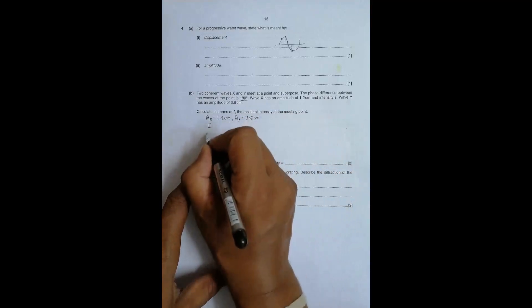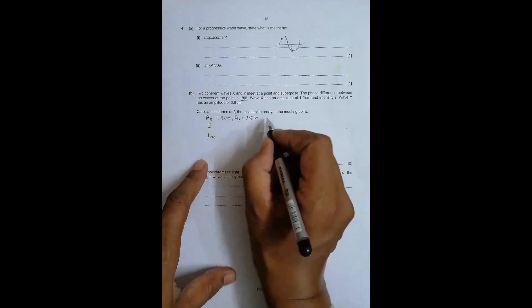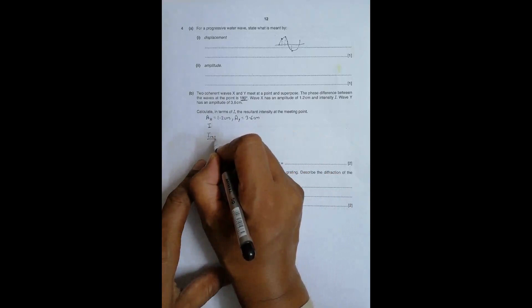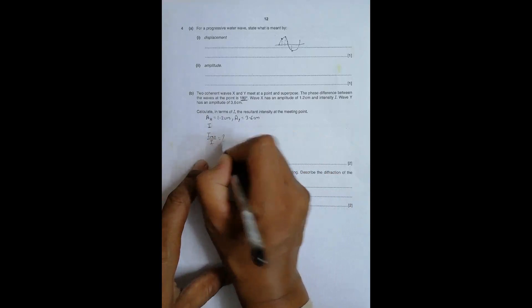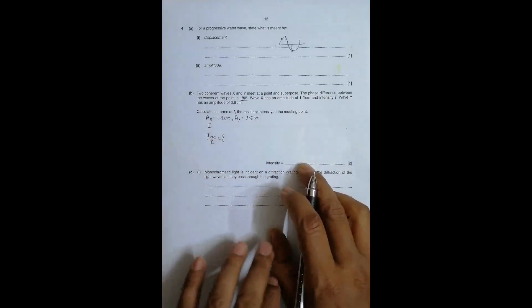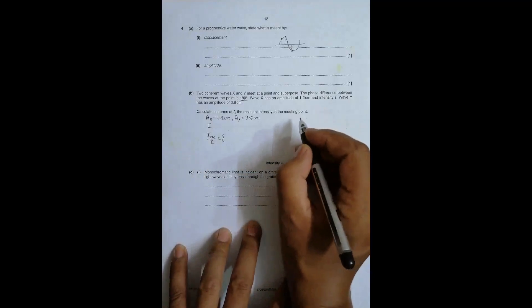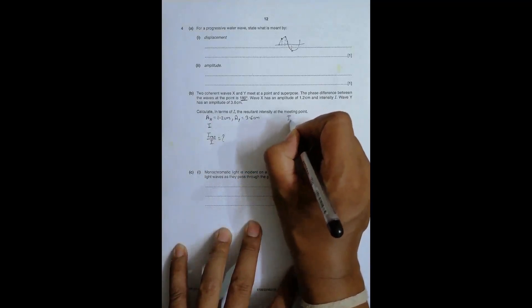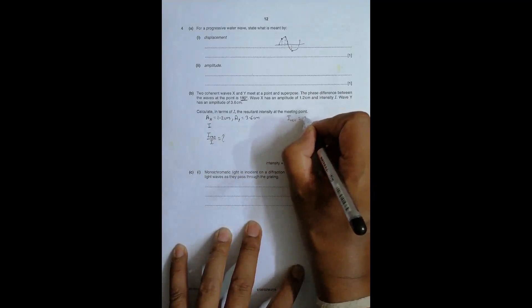We have to find the expression for the resultant intensity in terms of I. So let's say I_resultant by I equals what. One thing that we have to remember is during superposition what happens is the resultant amplitude equals 3.6 minus 1.2 centimeters because it is destructive interference.